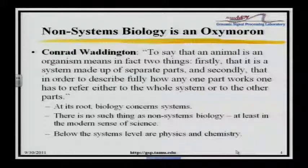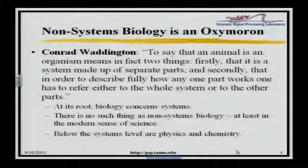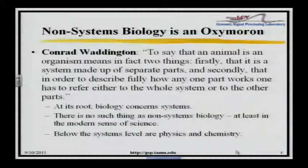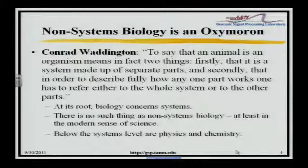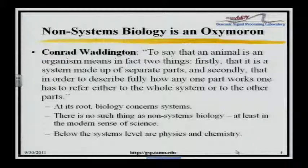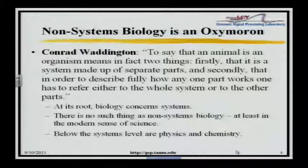In 1935, Waddington was writing about systems, but he's missing the mathematical structure — first of all he's not a mathematician, and second, the mathematics of systems hadn't been developed yet. It was being developed in the 30s in the Soviet Union and the United States. The key person I would put there is Norbert Wiener. The key statement about biology comes from Norbert Wiener.